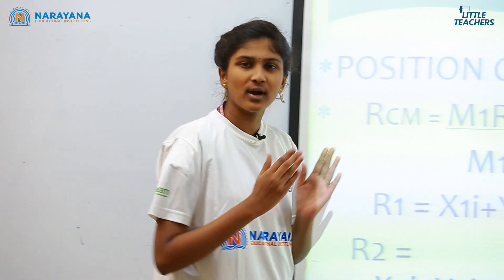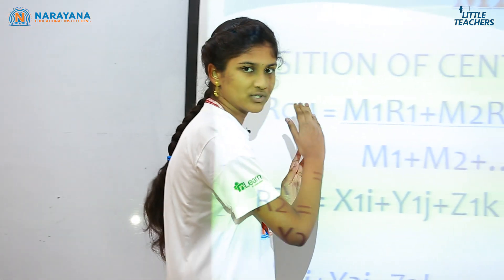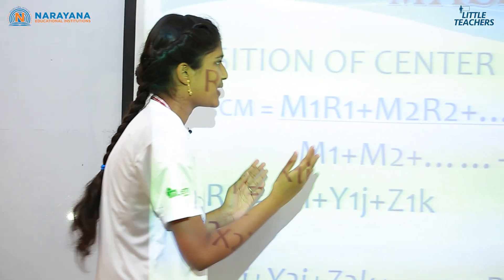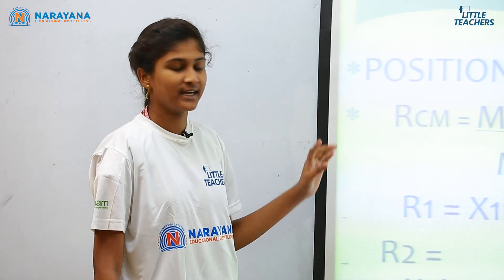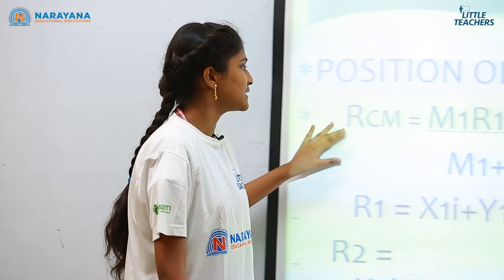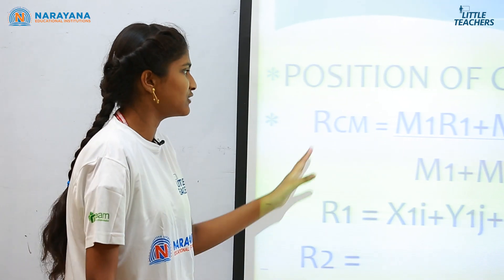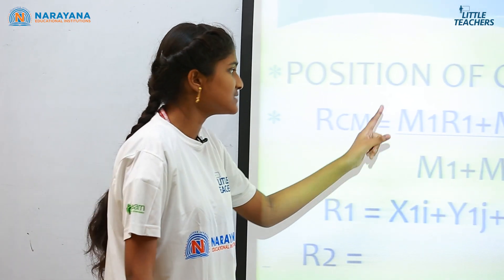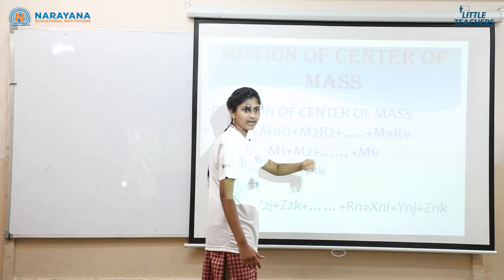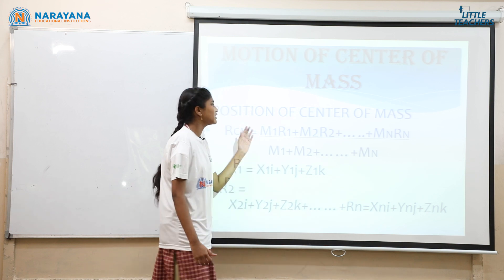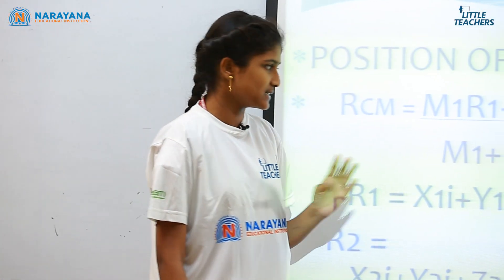First of all, what is the position of the centre of mass? To find the position of the centre of mass, we have a formula. R_cm, where cm stands for centre of mass, is given by m1·r1 plus m2·r2 plus so on mn·rn, because we have n number of masses and n number of particles.